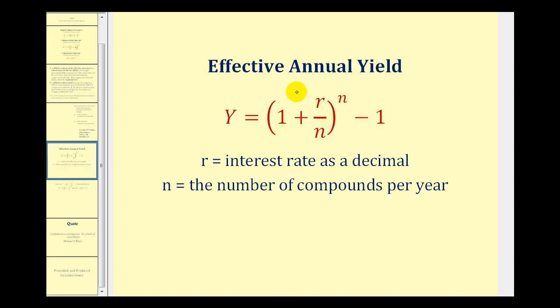Here's the formula used to determine the effective annual rate by hand, where Y is the effective annual rate, R is the interest rate as a decimal, and N is the number of compounds per year. But for this video we're going to show how to determine the effective annual rate on the graphing calculator. So let's look at our examples.